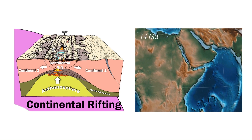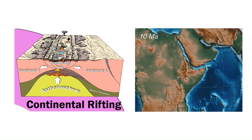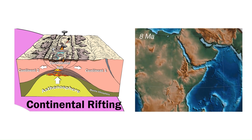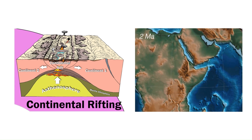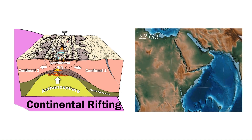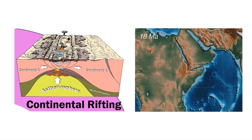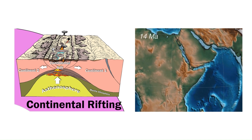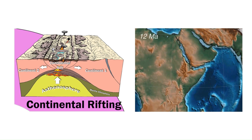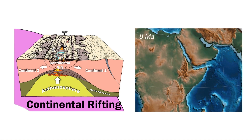First is continental rifting. As the crust is stretched beneath the rift, volcanic activity can occur, creating faults and eventually leading to the development of a rift valley and a narrow ocean. The animation on the right shows an ongoing example of this stage: the opening of the Red Sea between northeast Africa and Arabia.